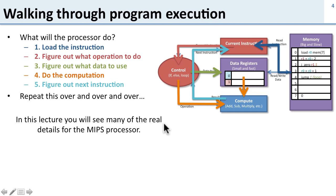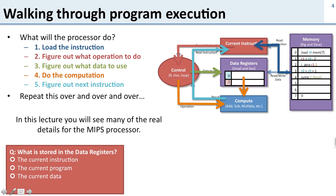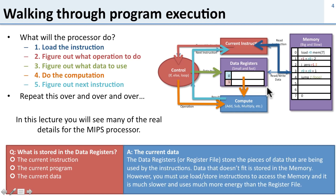In this lecture you're going to see many of the real details for the MIPS processor — the real MIPS instructions, the way the memory and register file are organized, and a bit about the current instruction and control logic. Before we get going, here's a question: what is stored in the data registers? What's stored in the register file is the current data being used for computation. There aren't a lot of these registers, so anything that doesn't fit has to be loaded and stored back and forth from memory, which takes a long time.